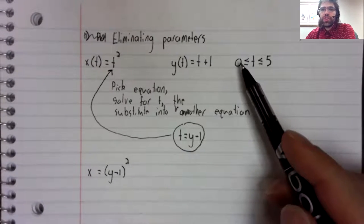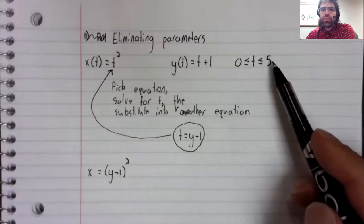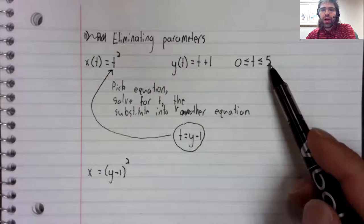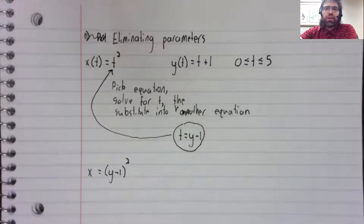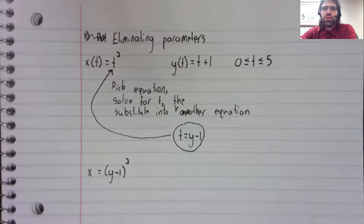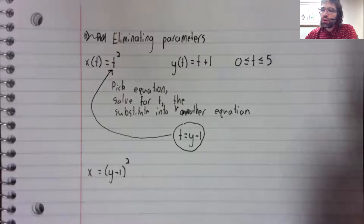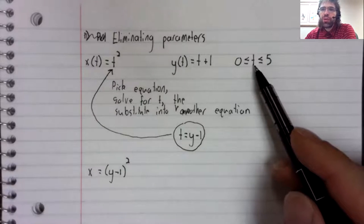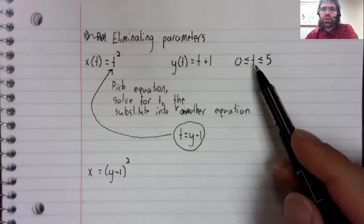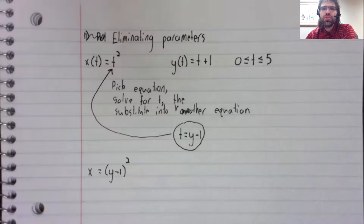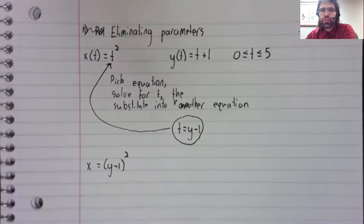T is between zero and five. So of the curve we just saw, some points on that curve are going to correspond to values of T outside this interval.